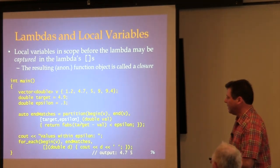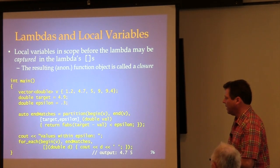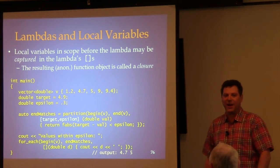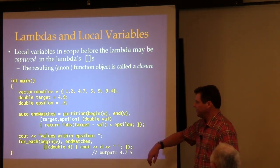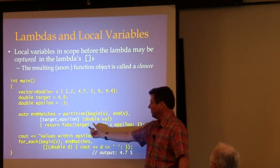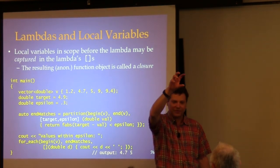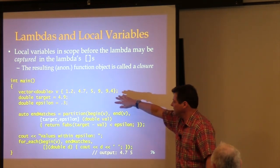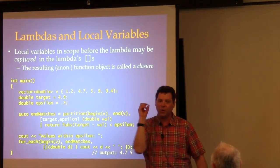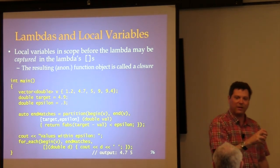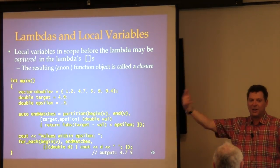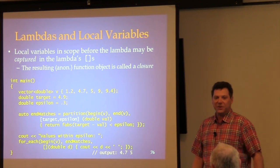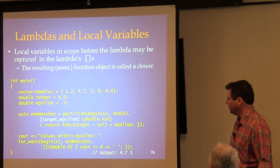If you change target and epsilon after the lambda is created, you won't change the behavior of the lambda — it was initialized with copies at the time of its creation. There are ways around this, but the simplest use of a lambda captures by value by default.